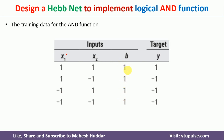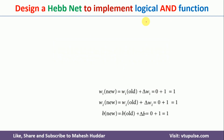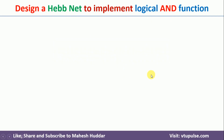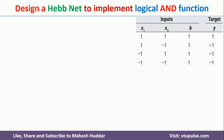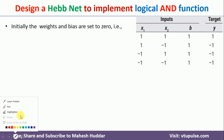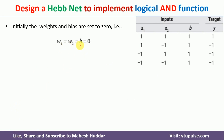Given this training data, we need to use the Hebb rule to find the Hebb network for this logical AND function. We initialize the weights as well as the bias to 0 initially — that is W1 = W2 = B = 0. We will take one example at a time and then modify the weights as well as the bias.